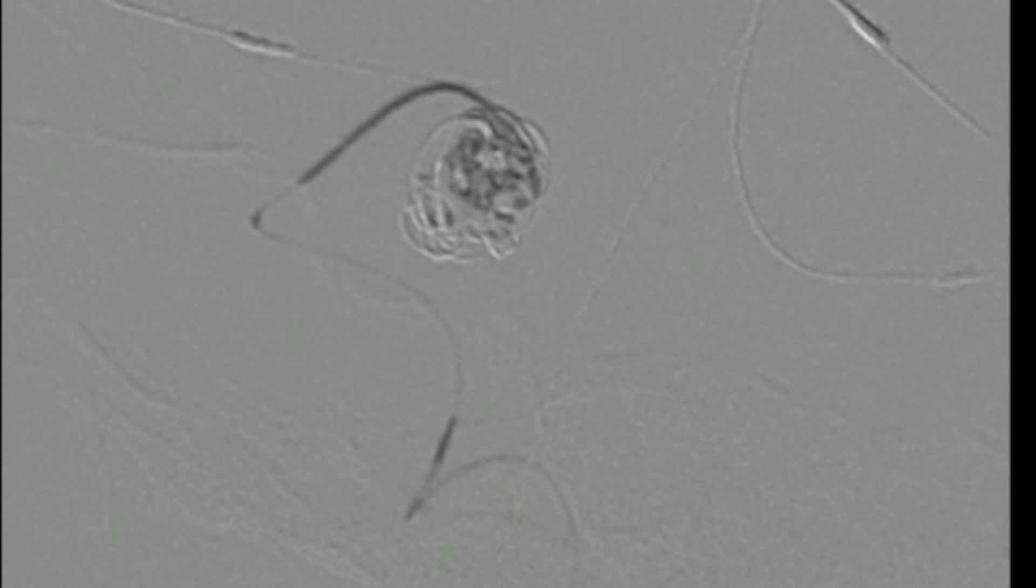Here you can see on AP and lateral views using a reverse mask technique that the new coil is dark whereas the previously placed coils are in the background. This gives the opportunity to see any coil movement and the exact position of the newly placed coils.